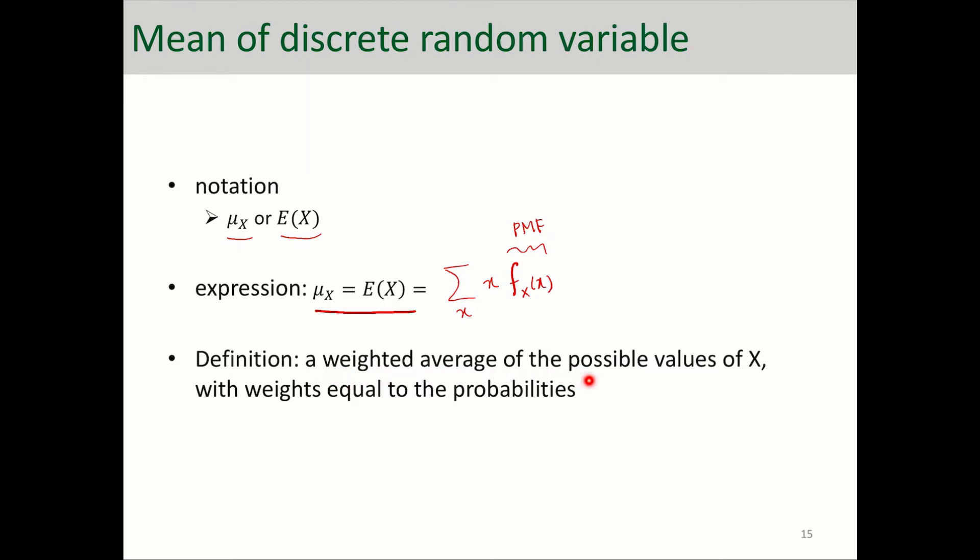It is a weighted average essentially of the possible values of X with weights equal to the probabilities. So here these are the weights and these are the values of X, and we're essentially doing a weighted average over them.